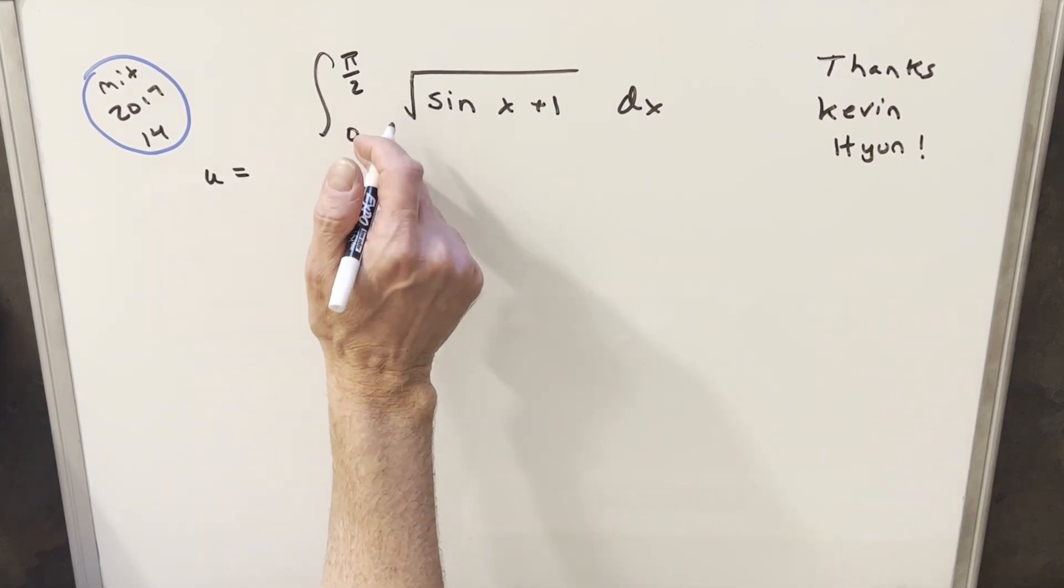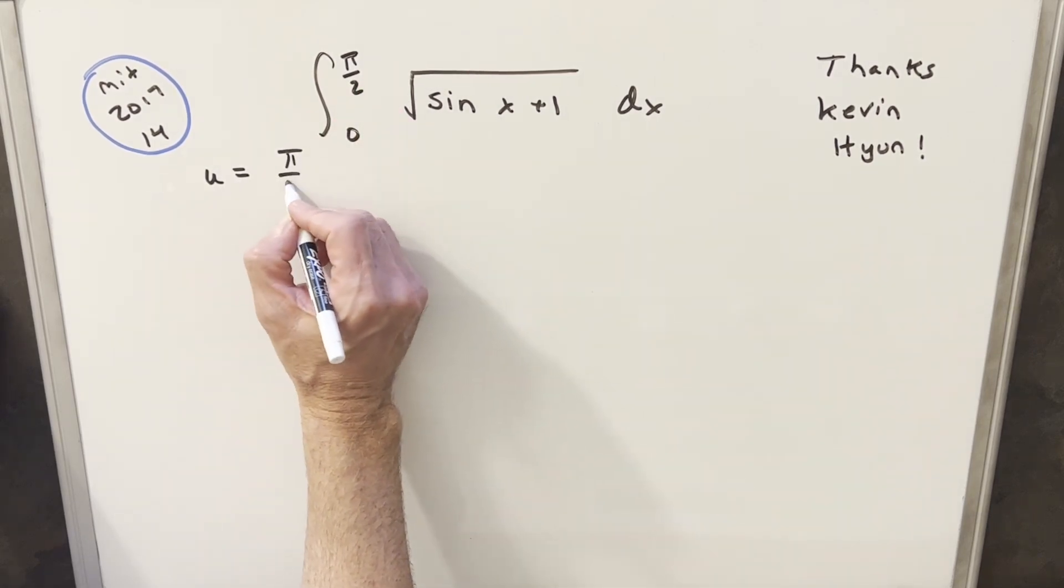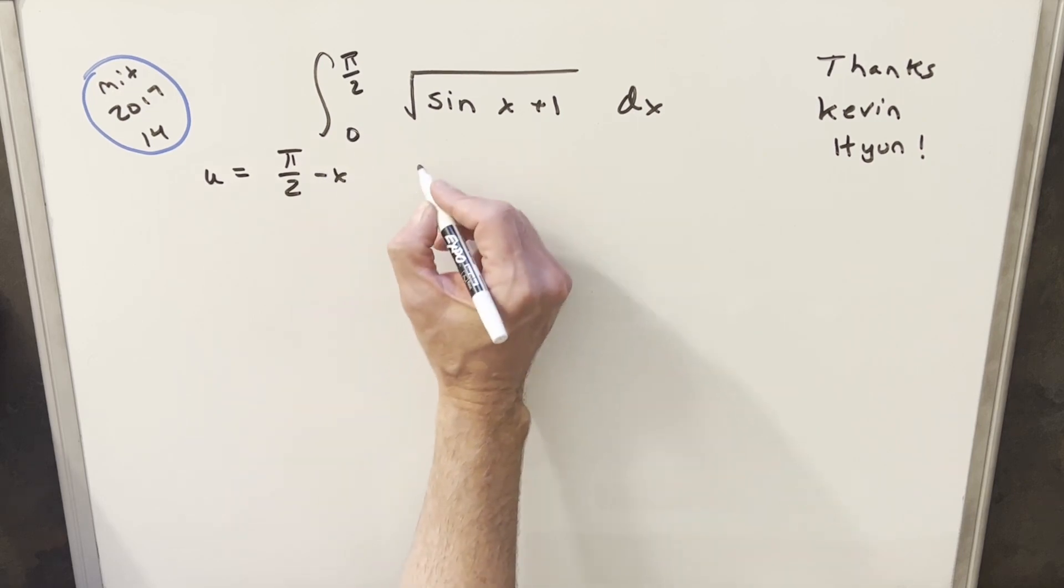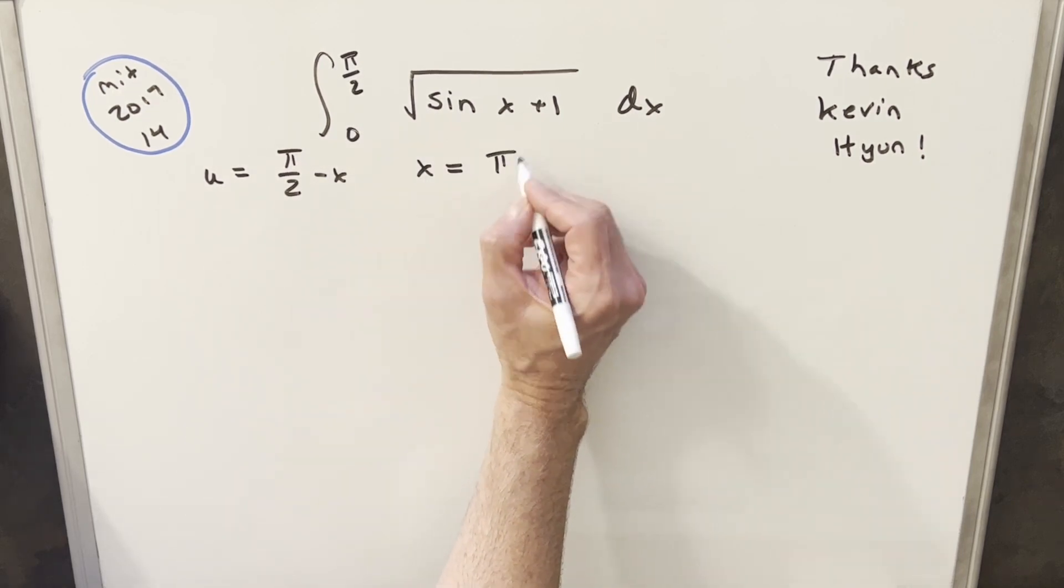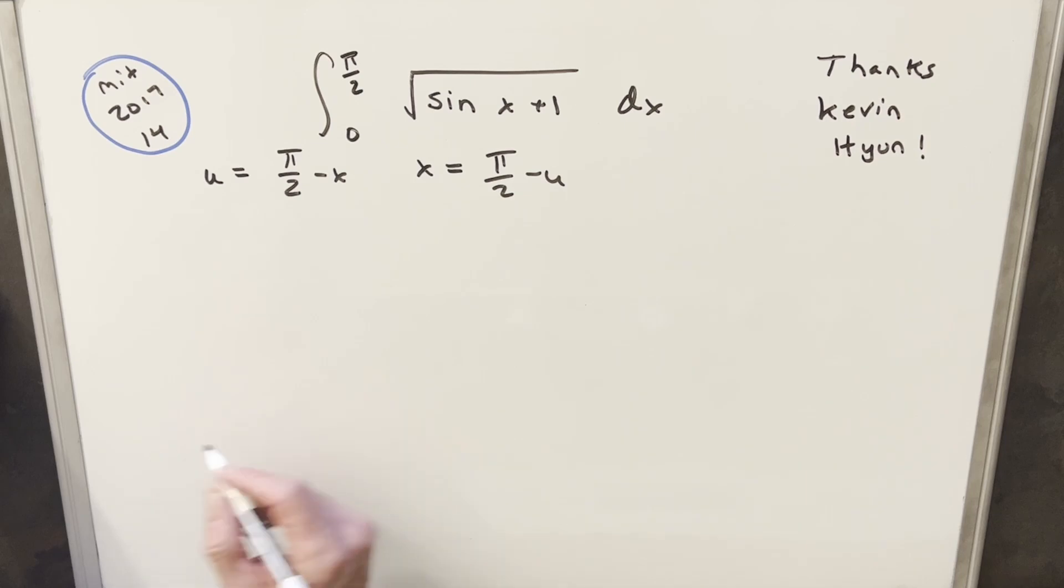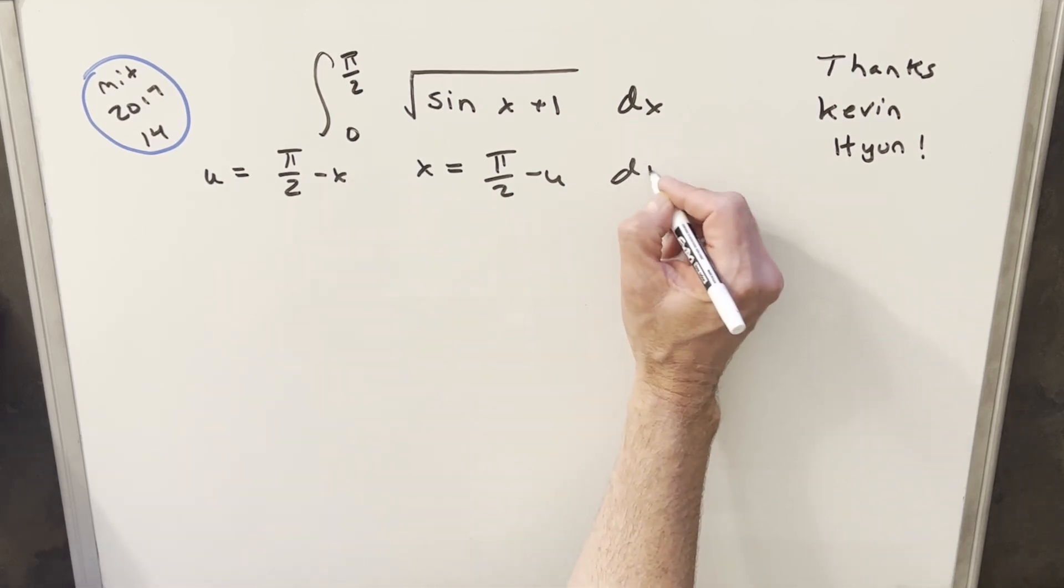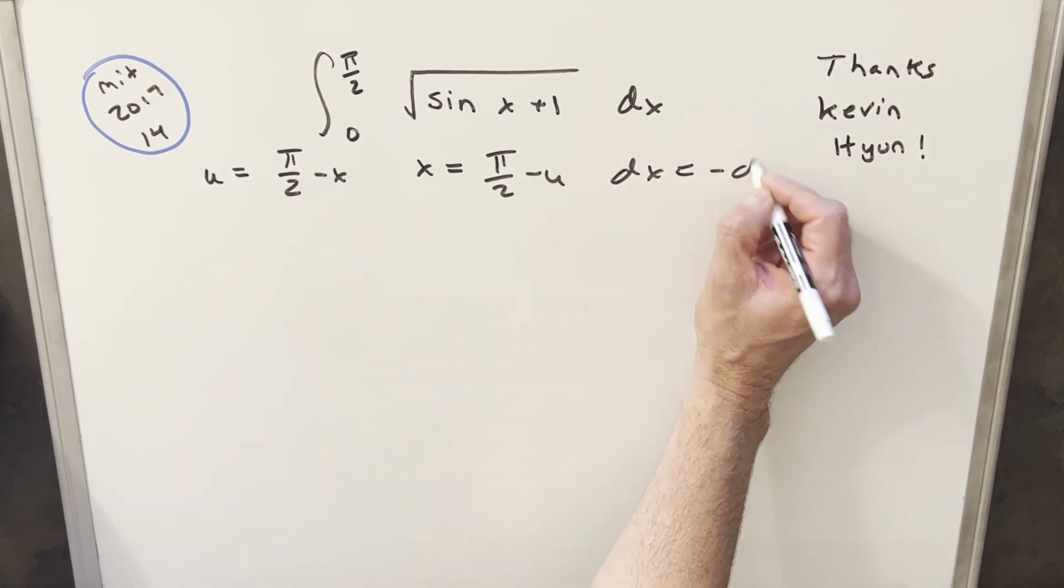what I'm going to do is we're going to use these bounds, and we're going to add the bounds together, essentially 0 plus pi over 2, and then subtract x. This is the same thing as saying x is going to be equal to pi over 2 minus u. I'll take my derivative here, and we find that dx is going to be minus du.